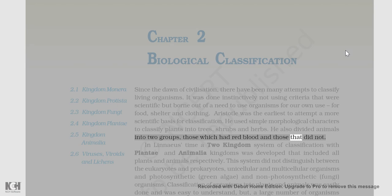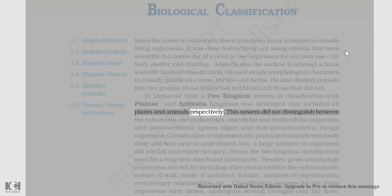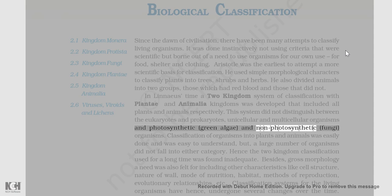In Linnaeus' time, a two-kingdom system of classification with Plantae and Animalia kingdoms was developed that included all plants and animals respectively. This system did not distinguish between the eukaryotes and prokaryotes, unicellular and multicellular organisms, and photosynthetic green algae and non-photosynthetic fungi organisms.